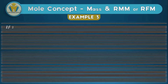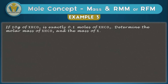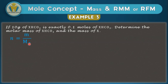In example three, we stretch our knowledge about the first formula. We're asked to find the molar mass of X and the mass of X. The question states: if 10 grams of X bicarbonate is exactly 0.1 moles of X bicarbonate, determine the molar mass of X bicarbonate and the mass of X. Since we're given mass and number of moles, we can rearrange n = m/Mr to make Mr the subject.